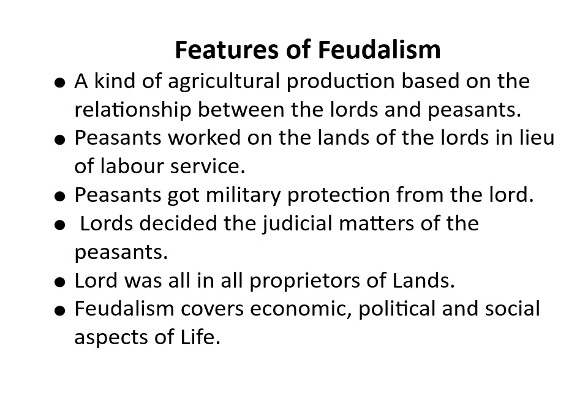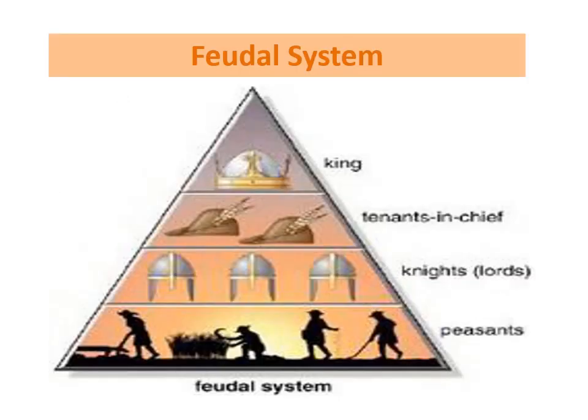The features of feudalism: agricultural production based on the relationship between the lords and the peasants. Peasants worked on the land of the lords; in lieu of labor services, peasants got military protection from the lords. Lords decided the judicial matters of the peasants. The lord was also proprietor of land. Feudalism covers economic, political, and social aspects of life. The feudal pyramid shows: king, then tenants-in-chief, then knights, then peasants.